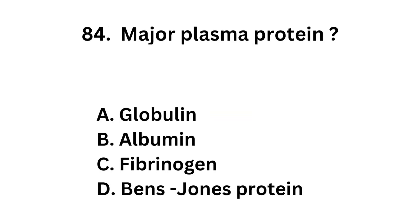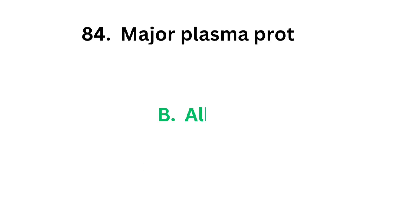Question number 84. Major plasma protein: Option A: Globulin. Option B: Albumin. Option C: Fibrinogen. Option D: Bence-Jones protein. The correct answer is option B, albumin. Major plasma protein is albumin.